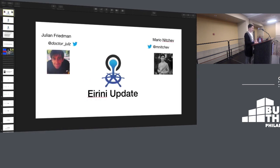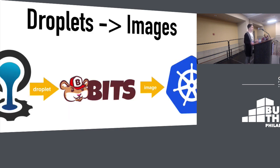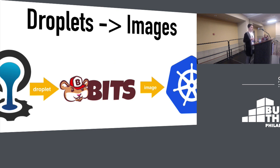You probably have a question: Cloud Foundry uses droplets and Kubernetes uses images - how do you get those things to work together? The answer is that we're keeping droplets and staging the same in Irini. You still get automatic buildpack detection, you still get a droplet produced. But we have a registry running which uses that droplet to generate an image and serve it to Kubernetes when your app starts. That registry is now part of BitService.